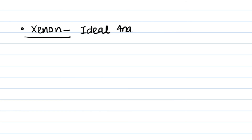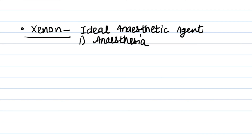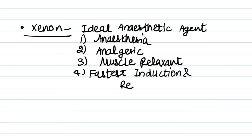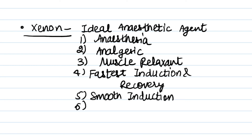Xenon is the ideal anesthetic agent. Why can't we use it? Because it is very costly. Its properties are: first, it is very good for anesthesia; second, it is analgesic; third, it is a muscle relaxant; fourth, it has the fastest induction and recovery; fifth, it has smooth induction; sixth, it is safe. But it is costly, which is why we can't use it routinely.